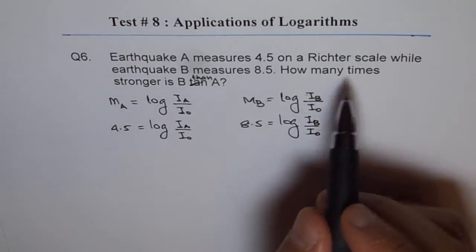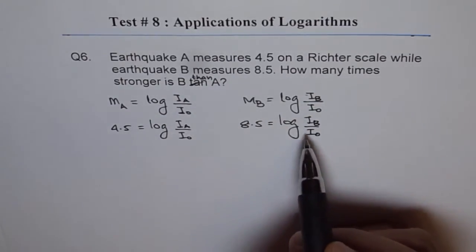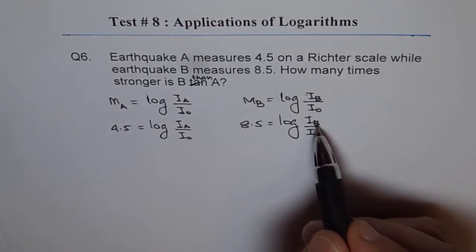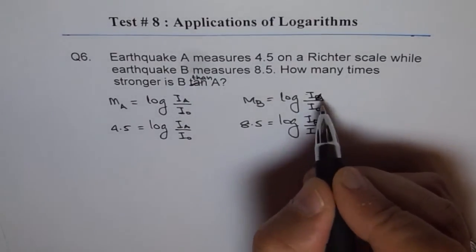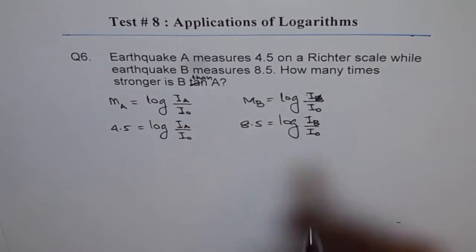How many times is B stronger than A? So, that means intensity I B we have to compare with intensity I A. So, we have to compare these intensities.